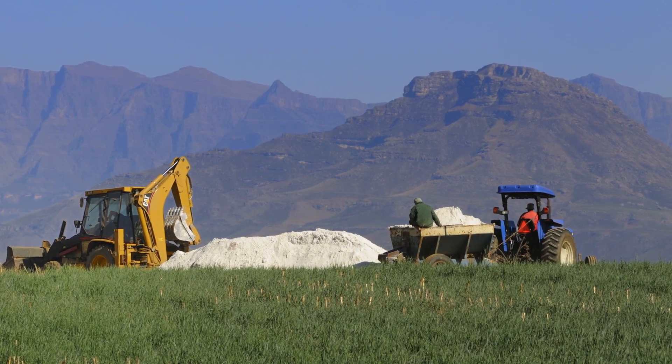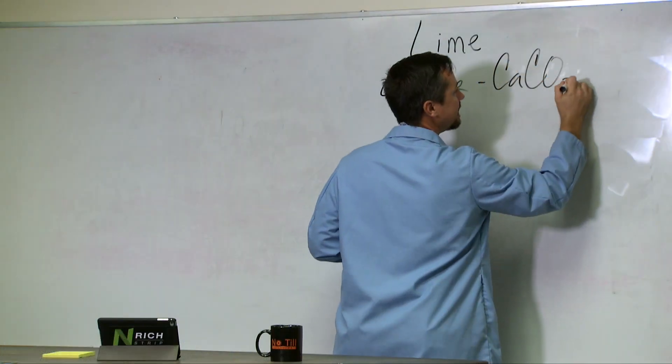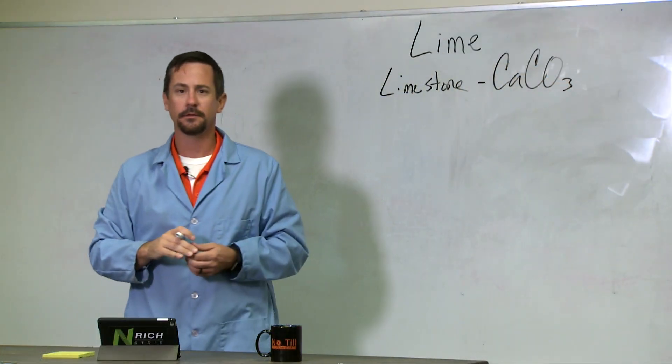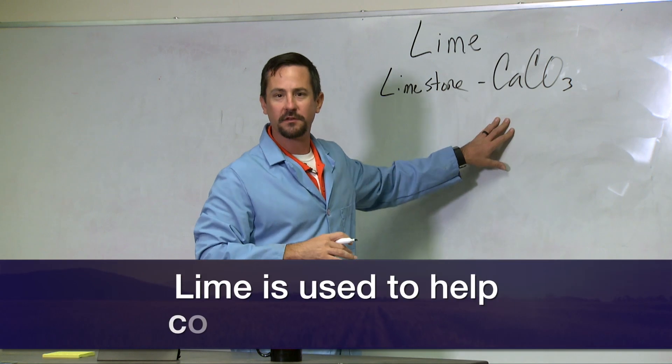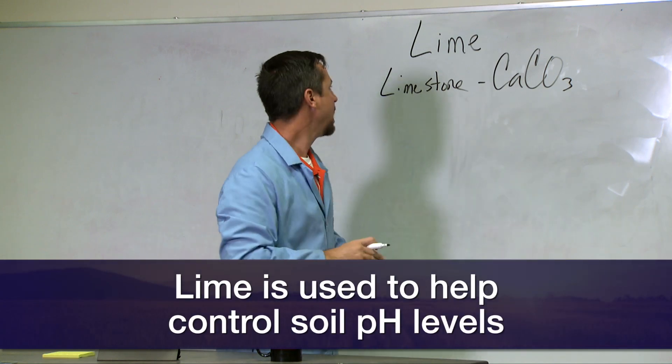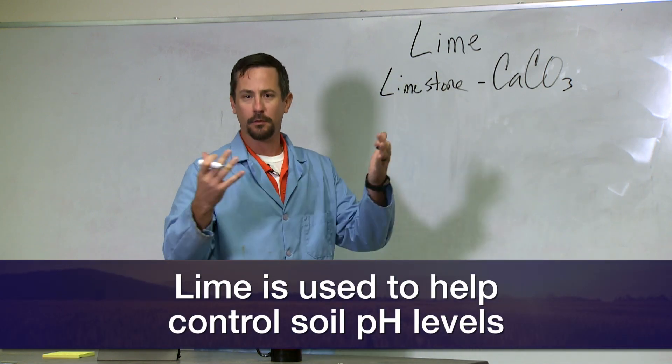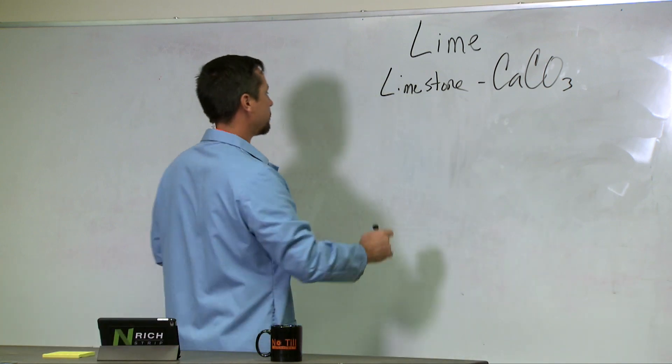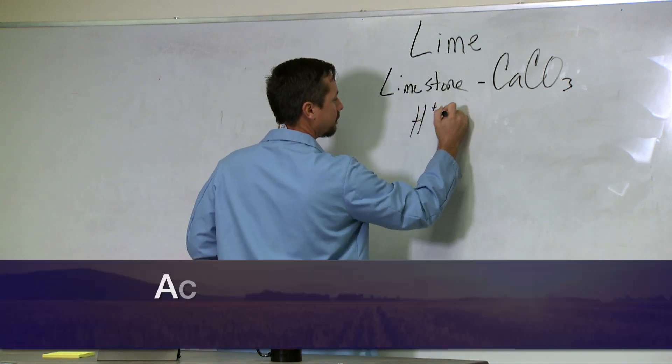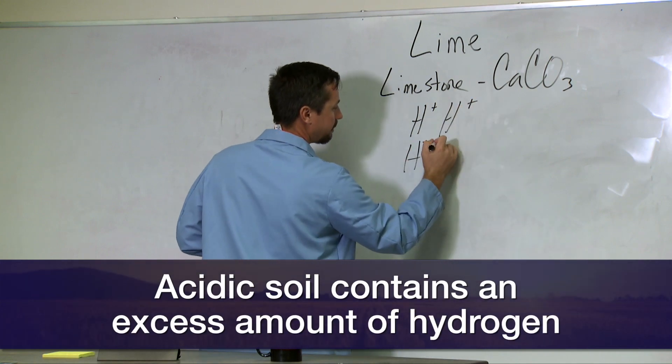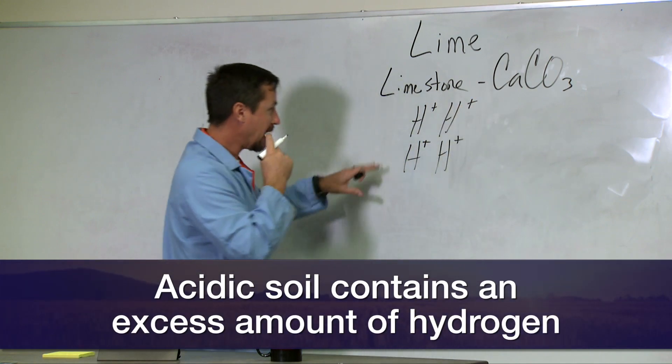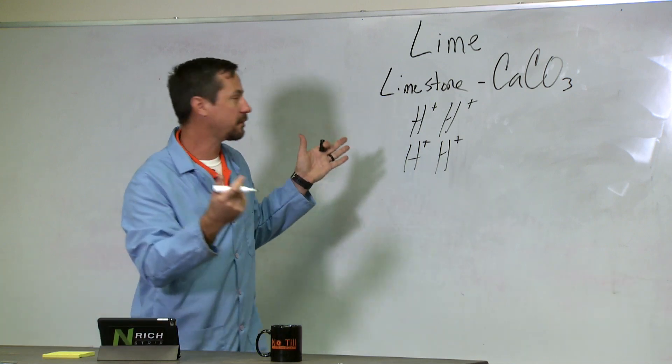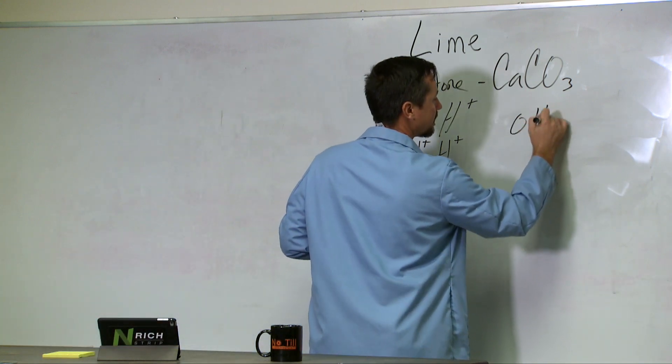Limestone is calcium carbonate, CaCO3. This is very important as we start talking about the soil system and increasing soil pH. Acidic soil is a soil system that has too many hydrogen ions. You basically have a bunch of hydrogen floating around in the soil and not enough hydroxides.